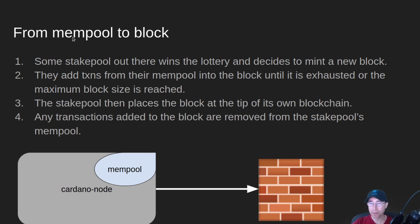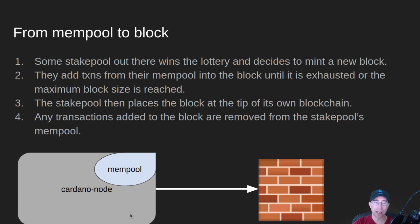Eventually the slot lottery happens — you can watch my other videos for that. There's a stake pool out there also running Cardano Node, and it wins the lottery and decides it's going to mint a new block on the blockchain. That node then looks at the mempool and loads all of those transactions into a block until either the mempool is completely empty or we've hit the maximum block size, which is about 65k currently. That stake pool then puts that block at the tip of its own blockchain, and takes any of those transactions in the block and removes them from its own mempool.